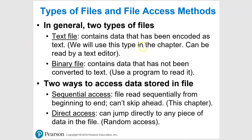That's basically all we're going to be using this chapter. Also, there are two ways to access files. For this chapter we're doing sequential access, which is kind of like how we start out with programming — we start at the first line and work our way straight down. We could use direct access or random access so you can jump to any point in the file, but for this chapter we're going to stick with sequential.